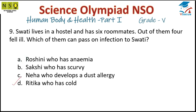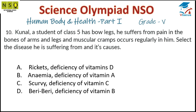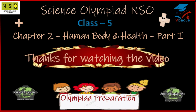Question number ten: Konal, a Class 5 student, has bow legs, pain in the bones of arms and legs, and muscular cramps. Rickets is a disease caused by deficiency of vitamin D — if we take less vitamin D, this disease occurs, causing pain in bones and muscular cramps. Option A is correct. I hope you enjoyed the video — thanks for watching, see you in the next video.